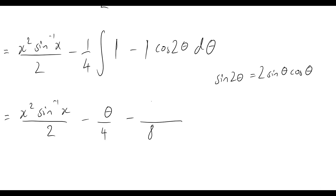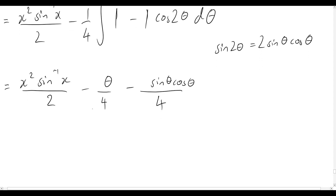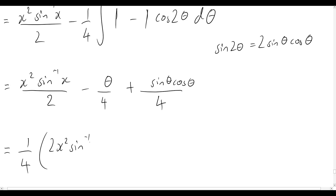Making sure to track our negatives — that term becomes positive after bringing the negative one quarter inside. We can factor out one quarter, giving us one quarter times the quantity: two x squared sine inverse of x, minus theta, plus sine theta cos theta.